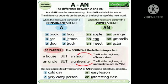'An uncle' — because there is a sound of U, and the word also starts with a vowel. But 'a university' — here there is a sound of Y, not U. So we put A, not AN.